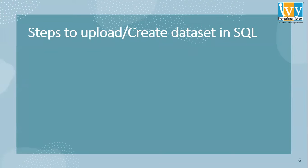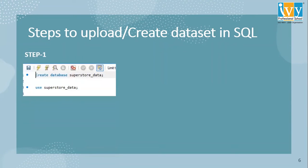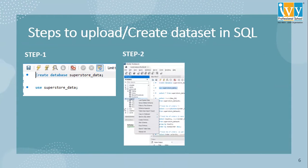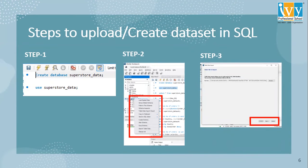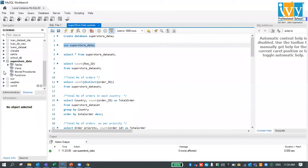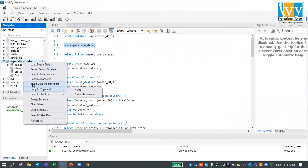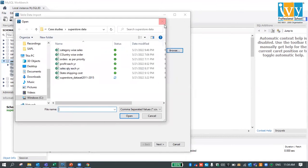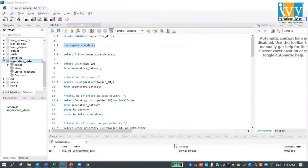Now let's look at the steps to upload and create a dataset in SQL. Step one is to run a query to create a database — I have mentioned a screenshot here. Step two is to right-click on the schema, then click on 'Table Data Import,' then browse and upload the data. We have to browse the data from the PC or desktop, click next, and then upload the data.